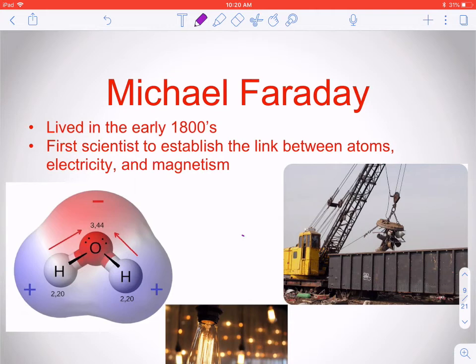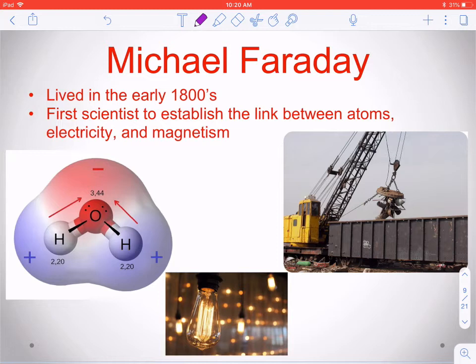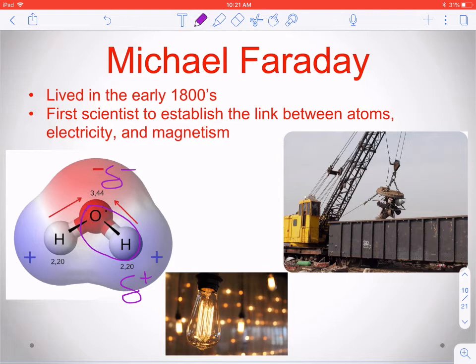Then we have Michael Faraday, who is given credit for establishing the link between atoms, electricity, and magnetism. We now know that water is polar — the hydrogens are partially positive while the oxygen is partially negative — due to the difference in electronegativity between oxygen and hydrogen. That difference in charge creates the opportunity for different atoms and compounds to conduct electricity, and also for different atoms to be magnetic. Faraday did the research establishing that link.